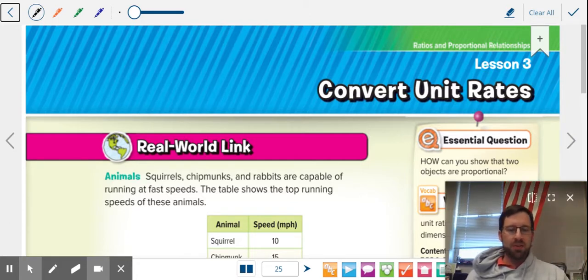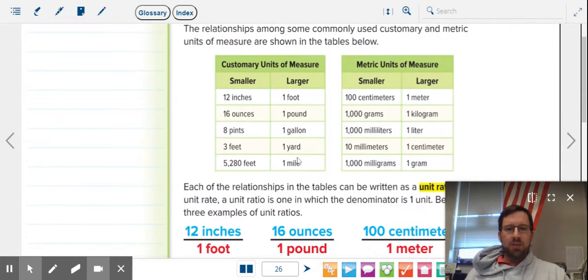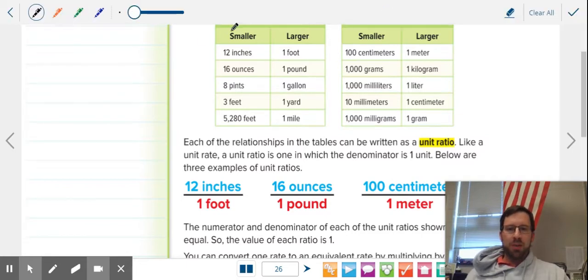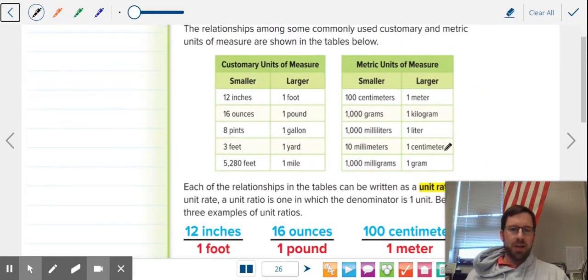We're on page 26, although this is the title page. So here are some common conversions. What we're going to do is take these conversions like 12 inches in a foot, 16 ounces in a pound, 100 centimeters in a meter, both customary or English and metric. Most of the world uses metric. America and a few countries still use customary units.